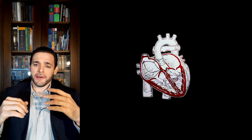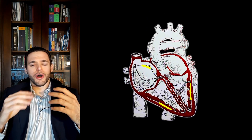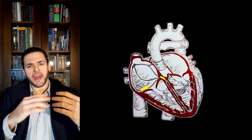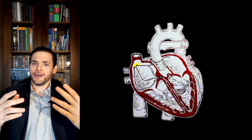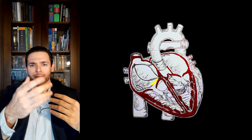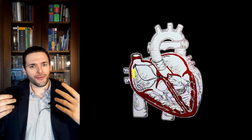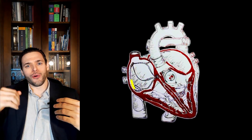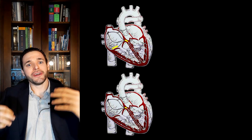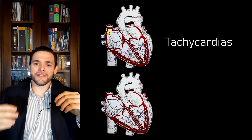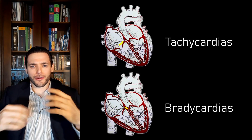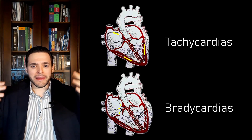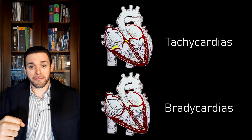As the name implies, arrhythmias means there's something wrong with your heart rhythm. If you tell me there's something wrong with your heart rhythm, the very first question will be: is it faster or slower than it should be? Because that's going to be our main differentiation between tachycardias and bradycardias, our two main types of arrhythmias.